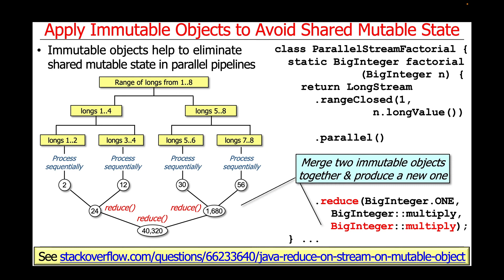The next phase in the reduction process is to merge two immutable objects together to create a new one. This takes place as the different threads finish working sequentially and then have to reduce the results to provide combined values. For example, the results from multiplying 1 by 2 and 3 by 4 are then reduced to create 24. Likewise, a reduction takes the values 30 and 56 and multiplies them together to create 1,680. And then finally, 24 and 1,680 are reduced by being multiplied together to create the final value 40,320.